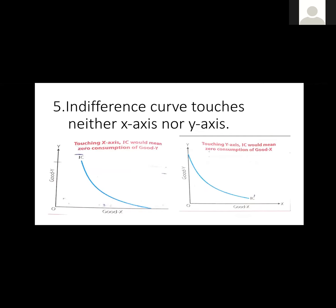Point 4: an indifference curve touches neither the x-axis nor the y-axis. One of the assumptions is that there are always two commodities. If IC touches the x-axis, it would mean zero consumption of good Y. We need at least two things for our satisfaction to remain meaningful, so neither axis can be touched.